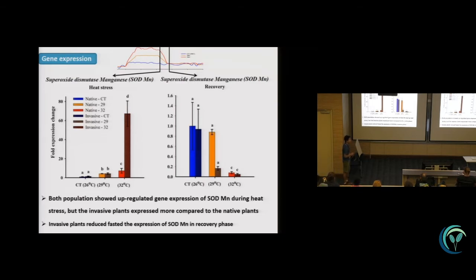Just right after the recovery phase, they stopped expressing the antioxidant. Why is it important? Because in order to produce the antioxidant, it's very expensive for the plant. If you have the ability to produce as much as you need, and right after when you don't need it, you can stop producing, it can save you a lot of energy.